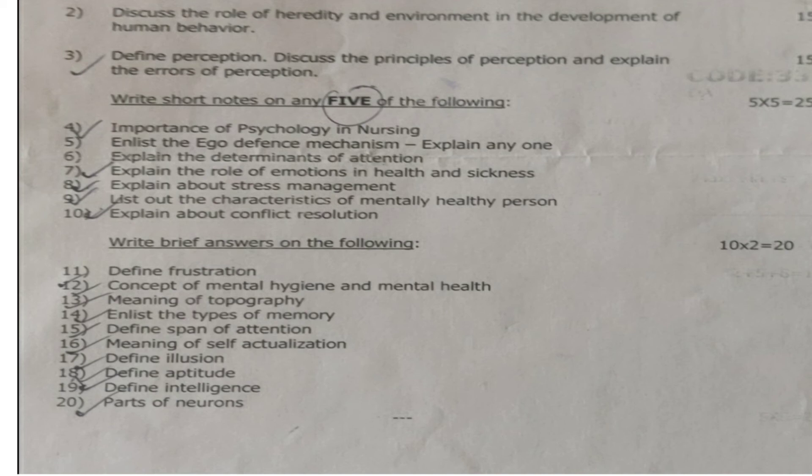Question 11: Define frustration. Question 12: Concept of mental hygiene and mental health. Question 13: Meaning of topography. Question 14: Enlist the types of memory. Question 15: Define span of attention. Question 16: Meaning of self-actualization. Question 17: Define illusion. Question 18: Define aptitude. Question 19: Define intelligence. Question 20: Paths of neurons.